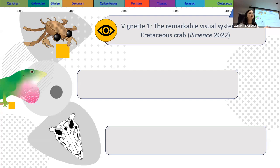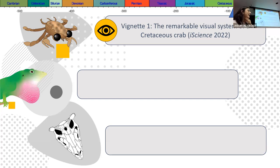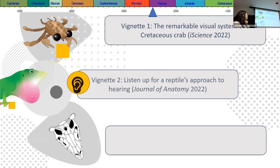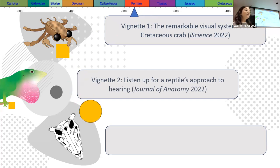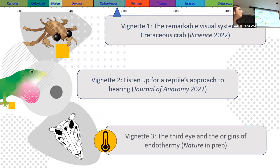Keeping all those things in mind, I have three vignettes from my own research exploring sensory evolution across various living and extinct groups. First, we're going to talk about a really peculiar crab with weird eyes from the Cretaceous. Then we'll switch phyla entirely to talk about how reptiles evolved hearing. Finally, we'll talk about what is the third eye — one of my favorite PhD chapters — and how it influences the evolution of thermoregulation.